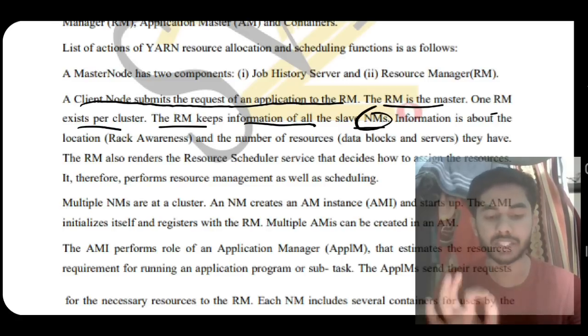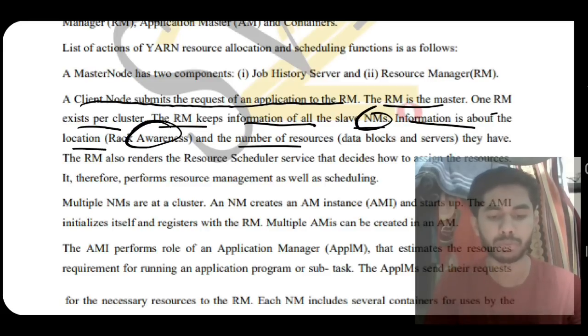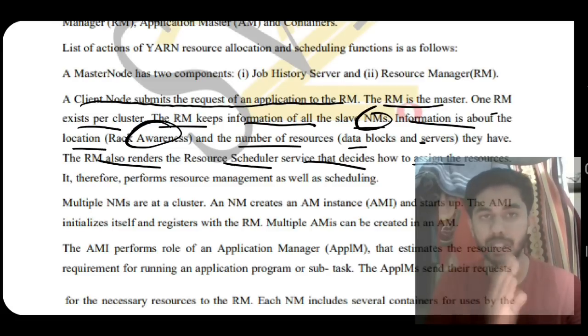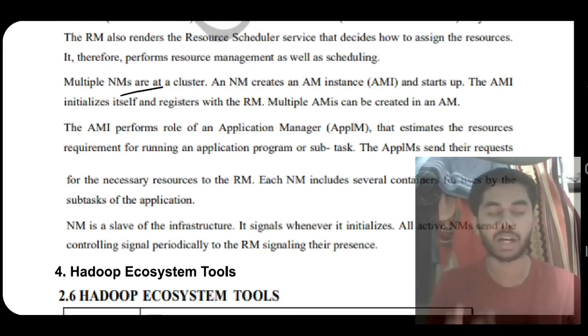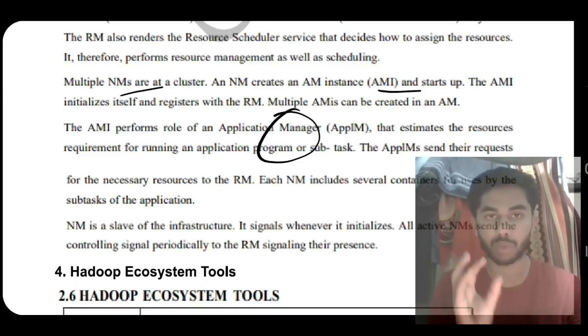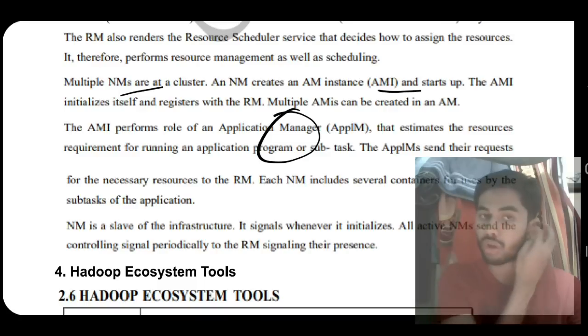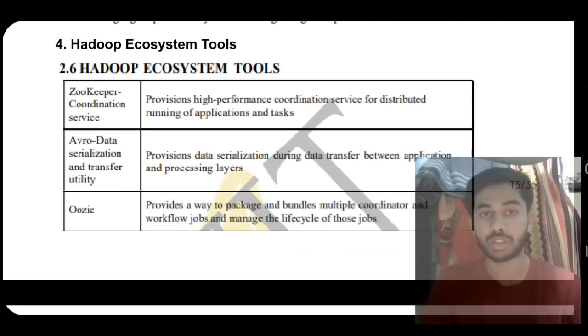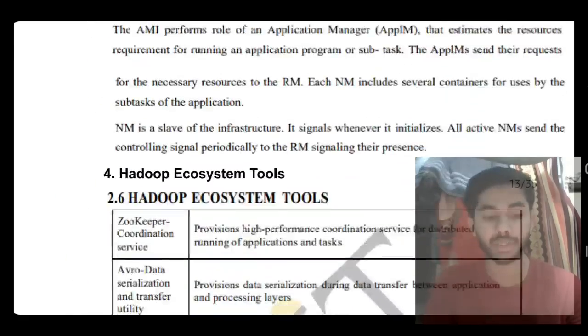RM is the master, one RM exists per cluster. It keeps all information of the slaves. NM is the node manager, it's the slave. Information about the location is called rack awareness, which we'll discuss in an upcoming question. The number of resources like data blocks and servers is also kept. RM renders the resource scheduler service and decides how to assign tasks to each server. Then multiple node managers are executed and perform operations. Application manager instances also do the same thing.